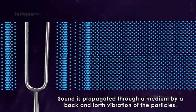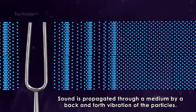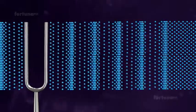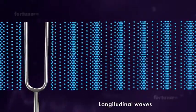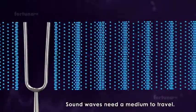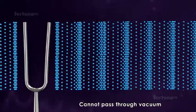Sound is propagated through a medium by a back and forth vibration of the particles. In air, sound travels in the form of longitudinal waves. Sound waves need a medium to travel and they cannot pass through vacuum.